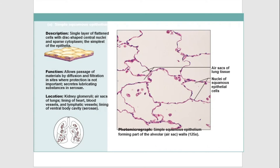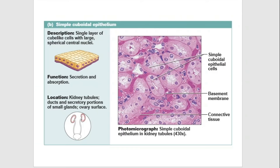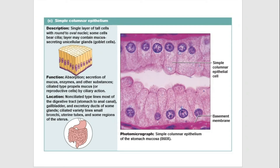Simple cuboidal epithelium consists of one layer of cuboidal cells. It is found in follicles of the thyroid gland, proximal and distal convoluted tubules, respiratory bronchioles, pigment layer of the retina, germinal epithelium of the ovary, and ducts of many glands. Simple columnar epithelium consists of one layer of columnar-shaped cells and is found in the stomach, small intestine, large intestine, and ducts of the pancreas and gallbladder.